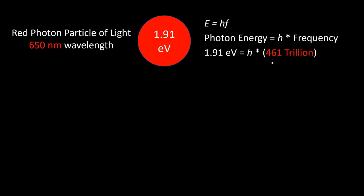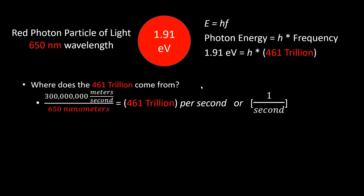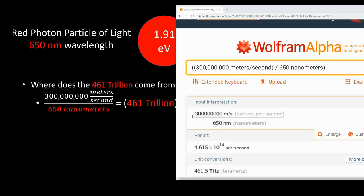Now where does the 461 trillion come from, or what causes this number? How do you derive this number? You take the speed of light and you divide into it the wavelength of light, and that gives you this number. Then you take this number and plug it into frequency in E equals HF. So let's verify. 300 million meters per second divided by 650 nanometers is 461 trillion, or 461 terahertz, which is per second.